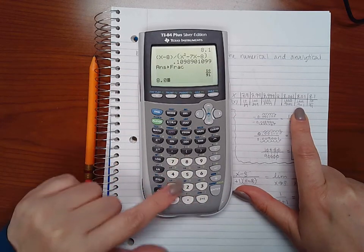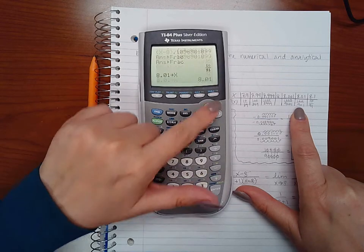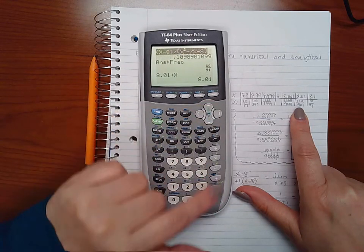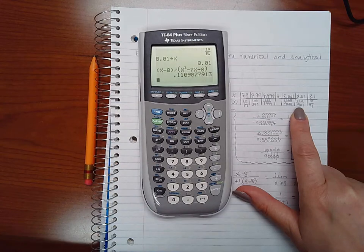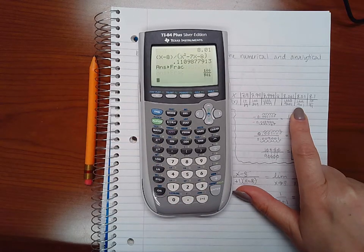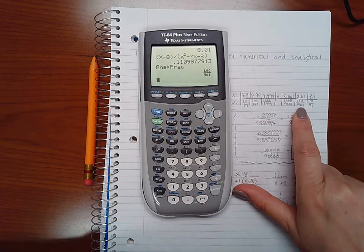Then now I'm going to do 8.01, store x, go back to my function, hit enter, hit enter to plug it in, and change that to a fraction and I get 100 over 901.